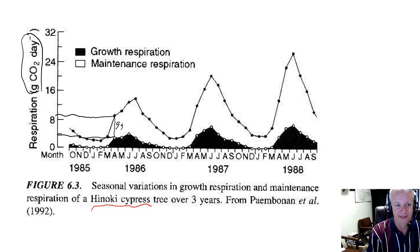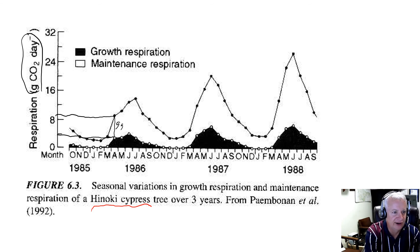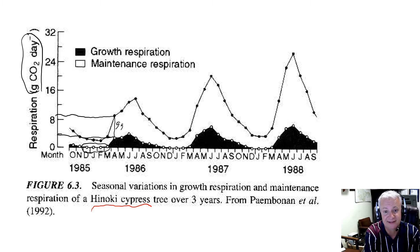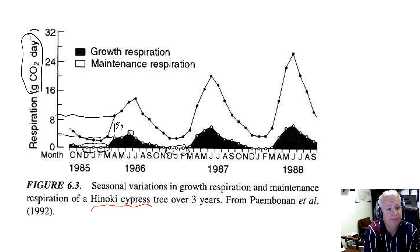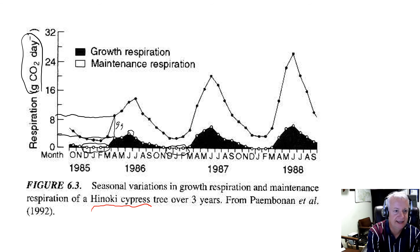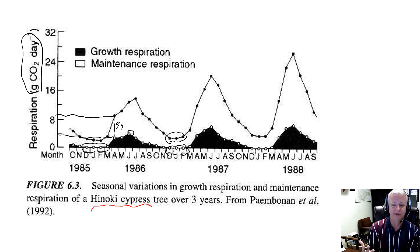A couple of things we can see from these data. First, growth respiration is essentially zero during the winter — that's because the above-ground parts of the tree are not growing during the temperate dormant season. Growth respiration peaks in June and July during the period of most rapid growth. Another thing we can see is that maintenance respiration is never zero — it occurs even during the dormant season because there are still living cells in the above-ground part of the tree that need to be maintained.